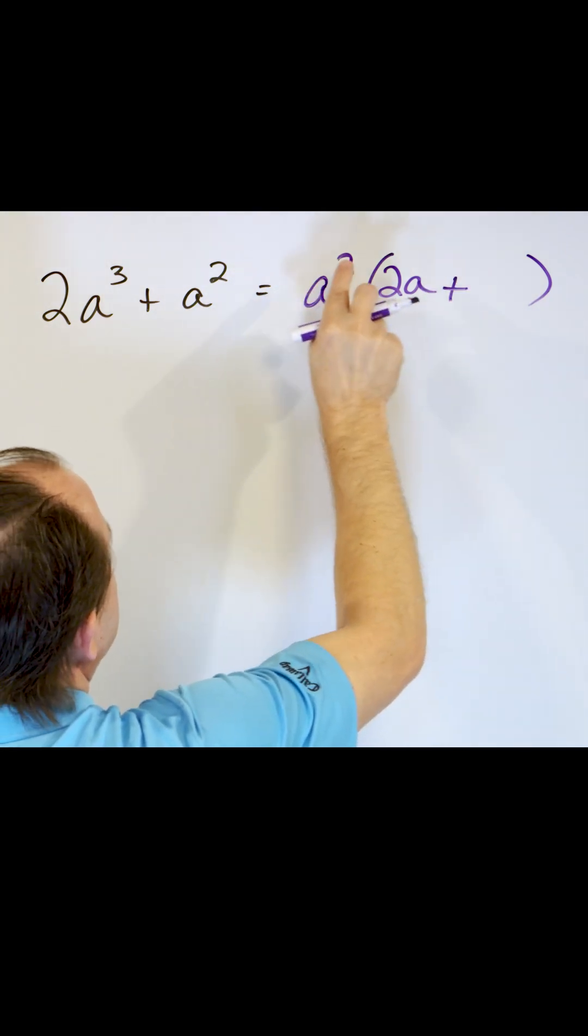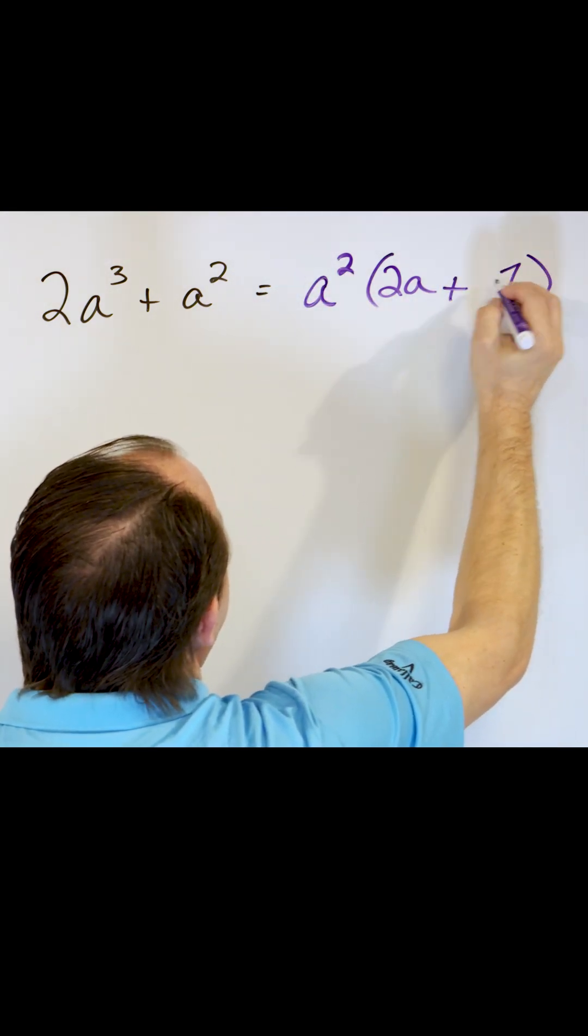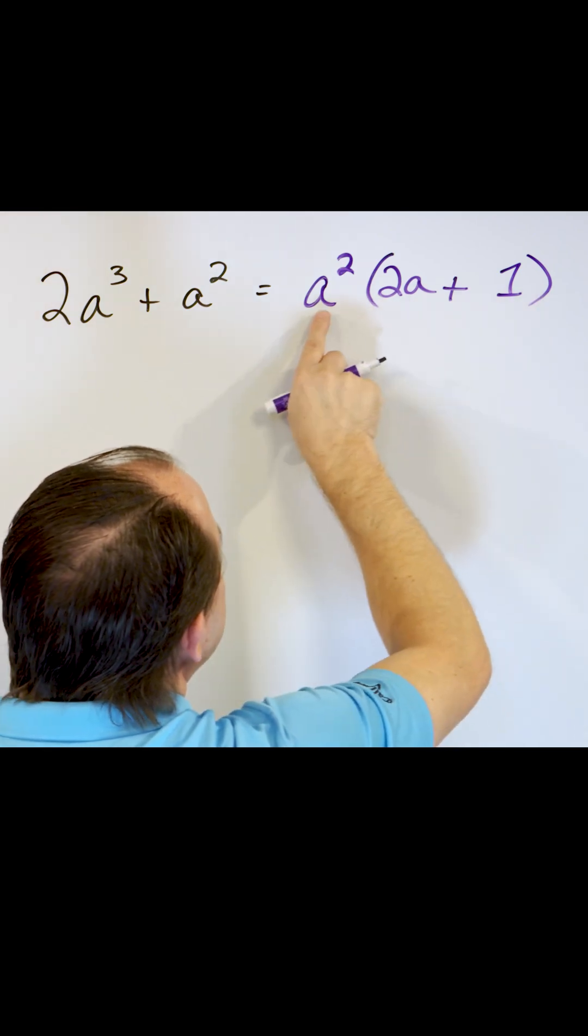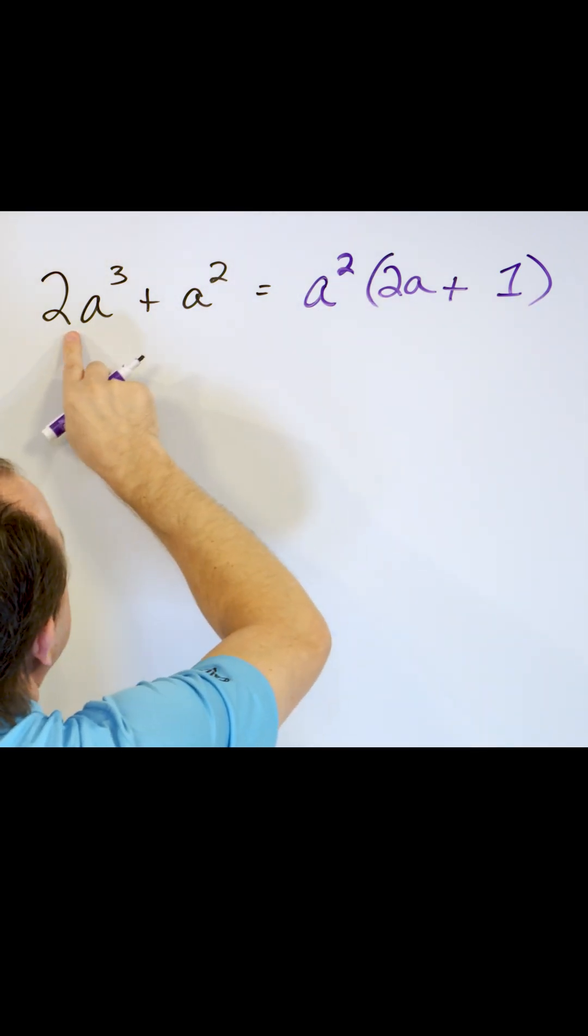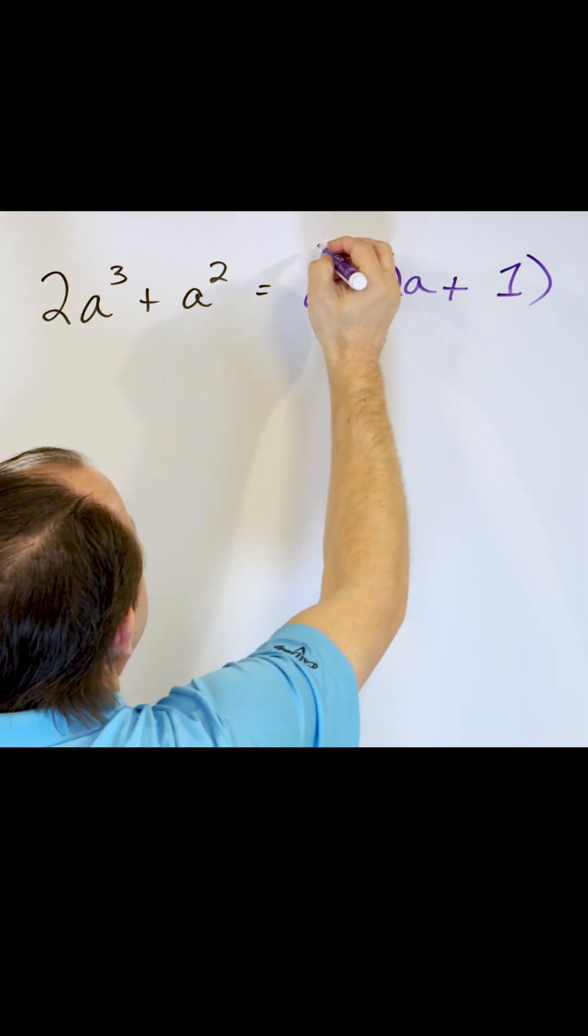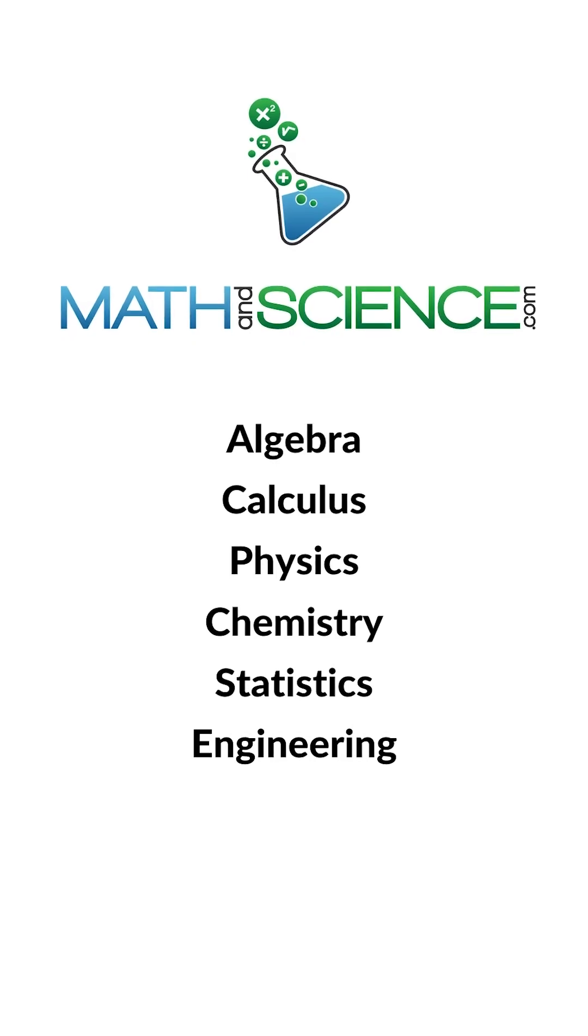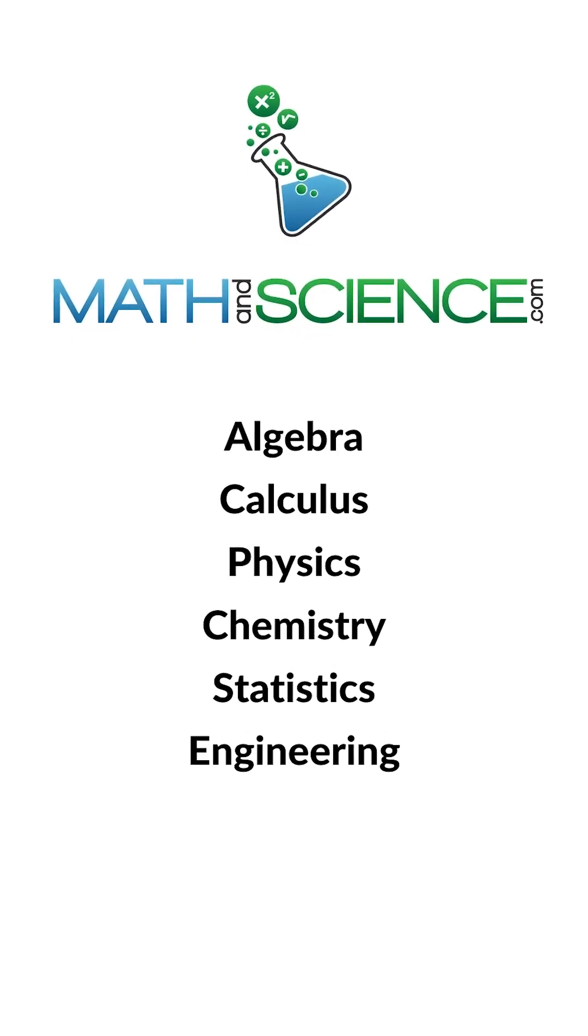Then we have a plus sign, and then a squared times something is a squared. There has to be a one here, so you multiply and you get two a cubed. You multiply and you get a squared, so you know the answer's right. I don't even have to look at my notes. Learn anything at mathandscience.com.